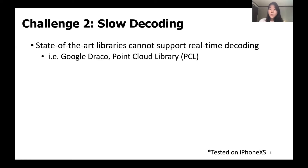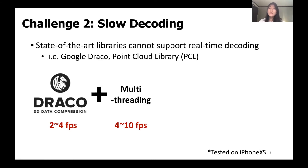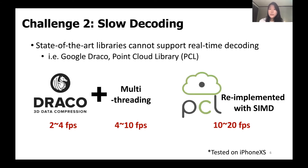Specifically, we tested the mobile version of Draco and it only achieved a decoding rate of 2 to 4 FPS. We tried dividing the content into several blocks and applied multi-threading, but it could only reach 4 to 10 FPS. In the case of Point Cloud Library, since it does not provide a mobile version, we re-implemented the core functions with acceleration techniques like SIMD fast vector calculation, but it could still only achieve 10 to 20 FPS.